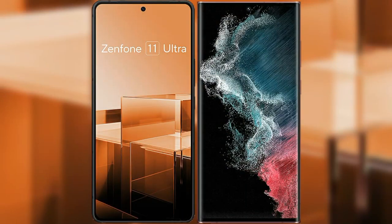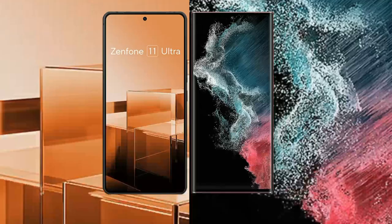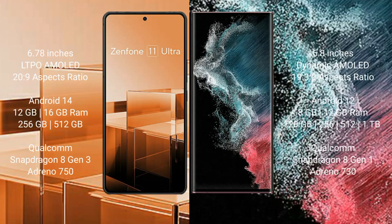I will compare the new Asus Zenfone 11 Ultra with Samsung Galaxy S22 Ultra. The Asus Zenfone 11 Ultra comes with a 6.78-inch LTPO AMOLED display with an aspect ratio of 20:9. The Samsung Galaxy S22 Ultra comes with a 6.8-inch Dynamic AMOLED display with an aspect ratio of 19.3:9.